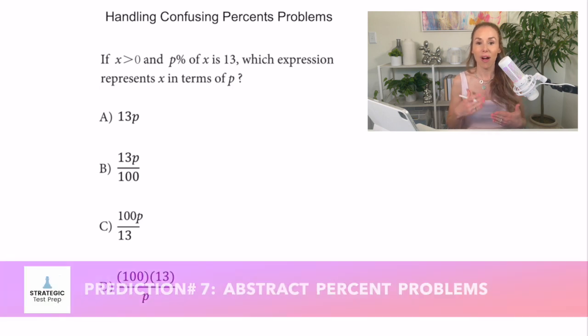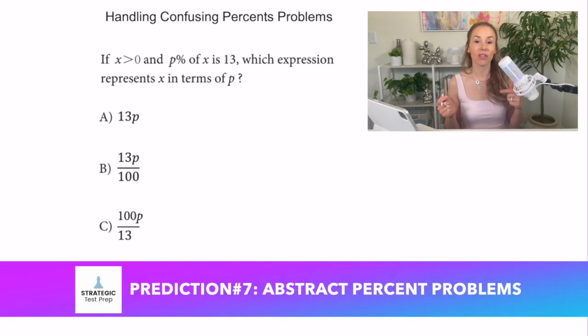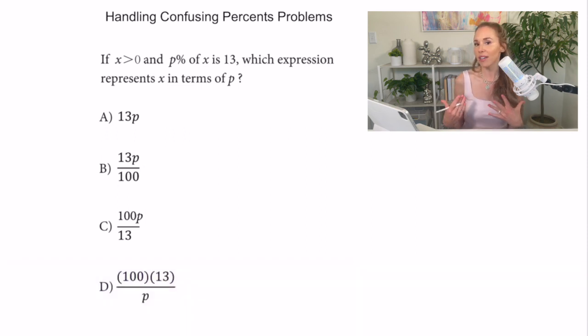All right. They are starting to throw on confusing percents problems. It showed up on the March. I think it's going to show up on the May. It's showing up on the digital SAT too. In another video, I showed you guys how to use a strategy called nice numbers on this, but I also think that there's another way to handle all of these percent problems. All it comes down to is setting up the equation correctly. So when I have a math phrase, like p percent of x is 13, I can write that as an equation.